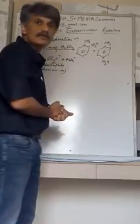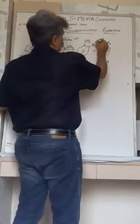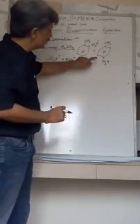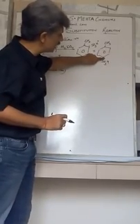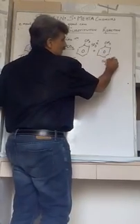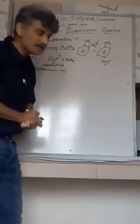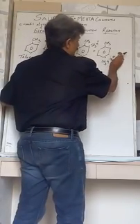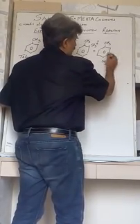SO3H is having plus sign. Same thing, the H leaving from this carbon making carbon electron rich, giving one minus. SO3H having one plus. This plus and minus gets nullified and as a result a bond will be formed between carbon and sulfur of SO3H group.